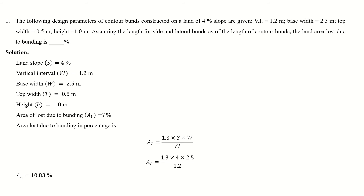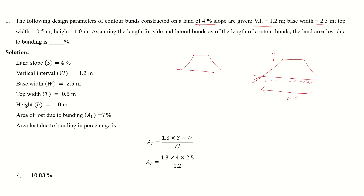Another problem: the design parameters of the contour bund are given directly, including the vertical interval and the base width. The base width is 2.5 meters — a larger bund compared to the previous problem. The top width is 0.5 meters and the total height of the bund is 1 meter. We also need to assume the length for the side and lateral bunds.